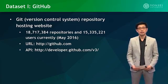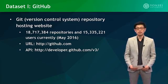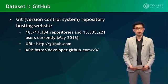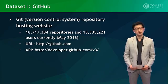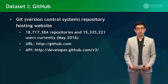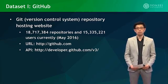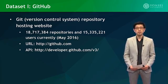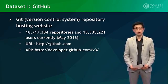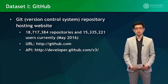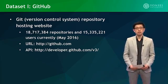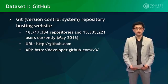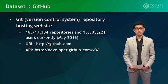The first dataset that comes with this course is called the GitHub dataset. GitHub is a repository hosting site for Git, which is a version control system. Other popular version control systems are CVS and SVM. GitHub provides many unique features. As of May 2016, it consists of 18,717,384 repositories and 15,335,221 users. The official URL for GitHub is http://github.com.